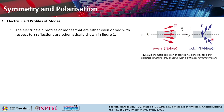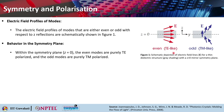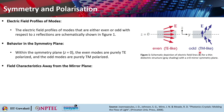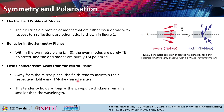For the odd modes, which are more like TM, the electric field is almost perpendicular to the mirror symmetry plane z equals 0, and exactly perpendicular at z equals 0. That is how you can differentiate mode profiles into even (TE-like) or odd (TM-like). Away from the mirror plane, the fields tend to maintain their TM and TE-like characteristics, as long as the waveguide thickness remains smaller than the wavelength of the light.